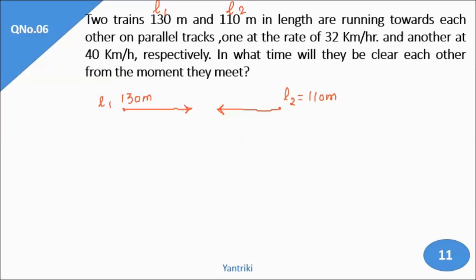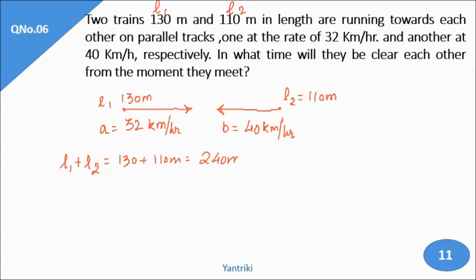One train is moving at 32 km per hour — that is 'a' in our case — and the other train is moving at 40 km per hour — that is 'b'. In what time will they clear each other from the moment they meet? The first thing to do is add L1 and L2: 130 plus 110 gives 240 meters.